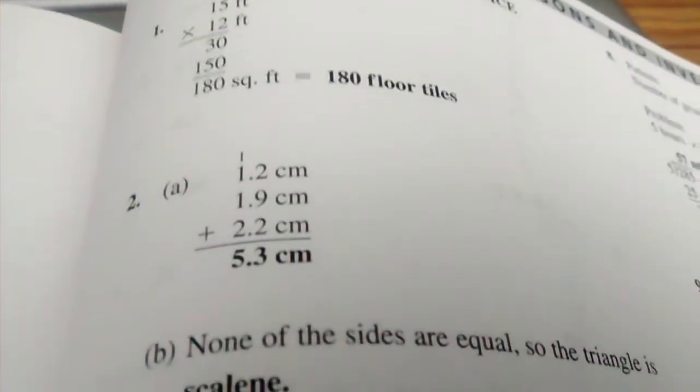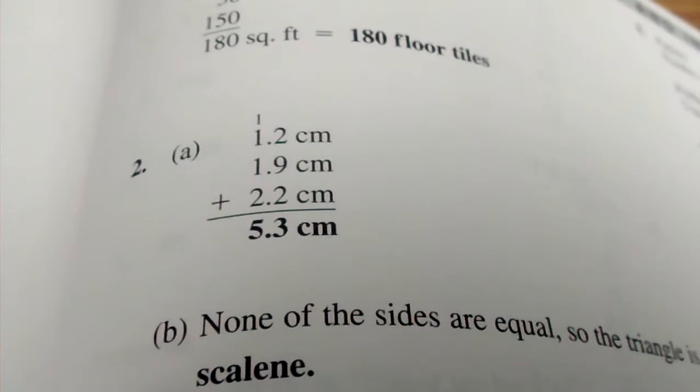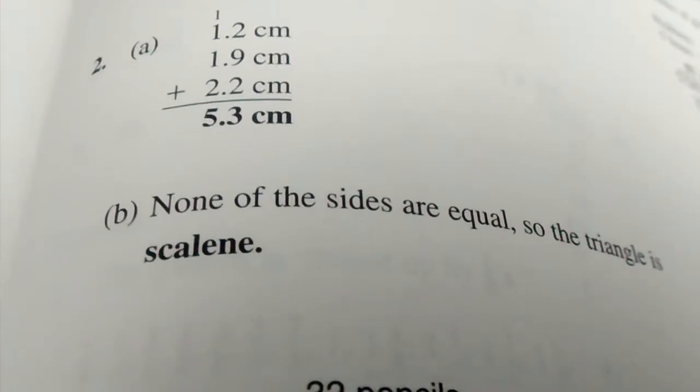It's in 119, 180 floor tiles. Number 2, 5 and 3 tenths, that's A. B, scalene.